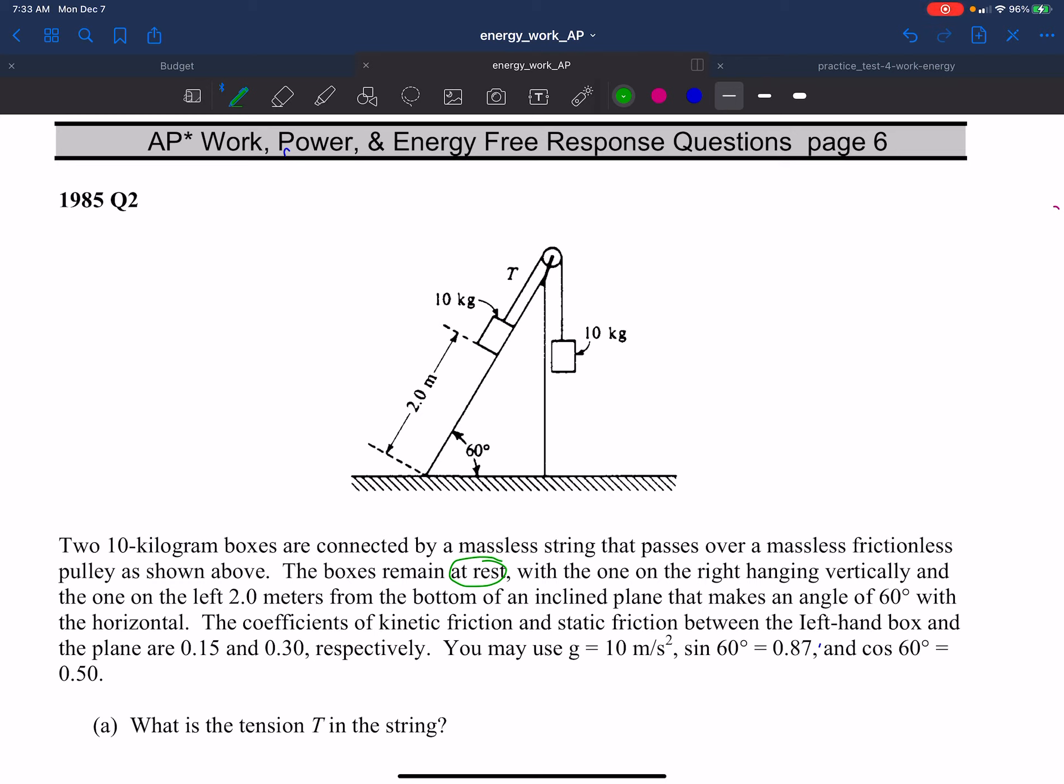And then they tell us to use some rounded values. And again, using 10 meters per second squared as g is pretty standard on AP tests because they try to make most of the calculations doable in your head, believe it or not, in AP. So they will let you go to 10.